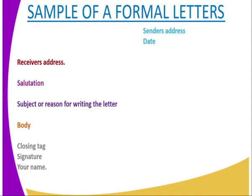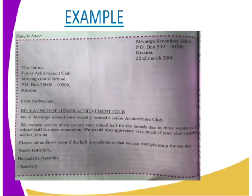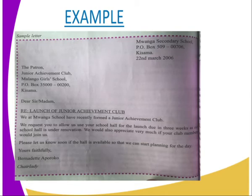You can have your closing tags, signature, and name. For instance, in the example shown, we have a secondary school, the P.O. Box, and the date on the right. On the left we have who the letter is being addressed to, the P.O. Box, the salutation, and the heading stating the reason for writing — for example, 'Launch of Junior Achievement Club.' We can also see the body and lastly the signing off: 'Yours faithfully, Bernadette Aporoco, Chairlady.'